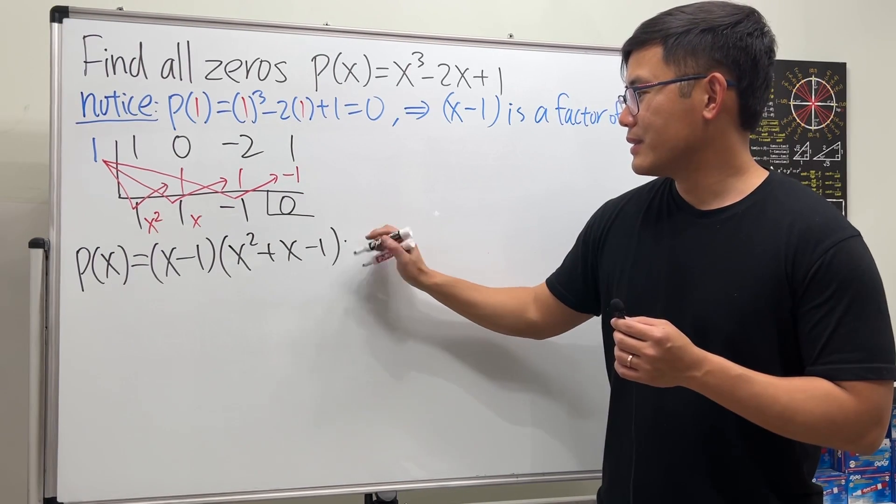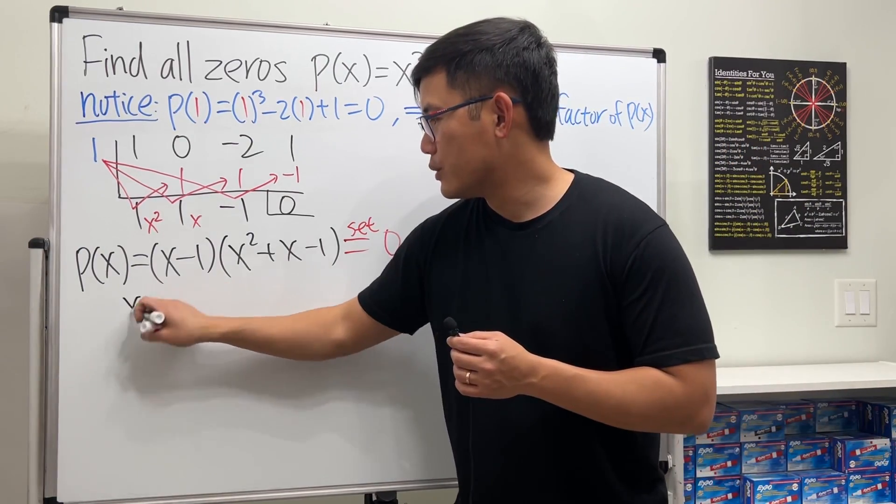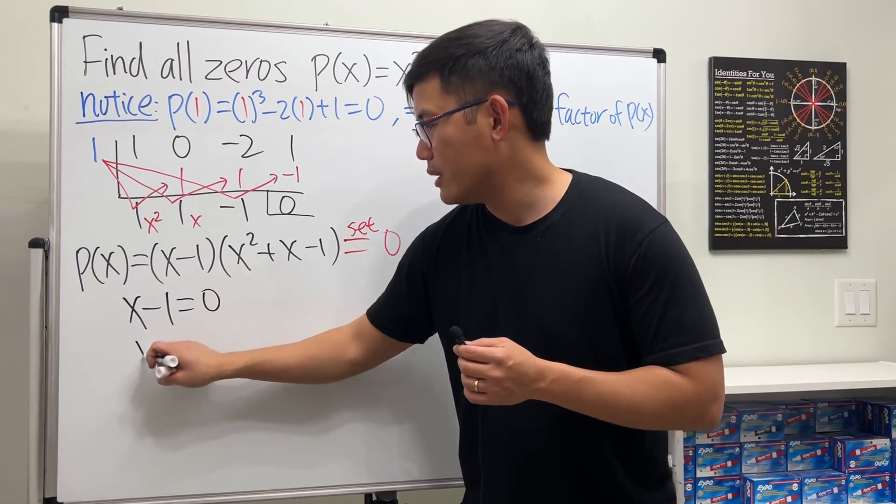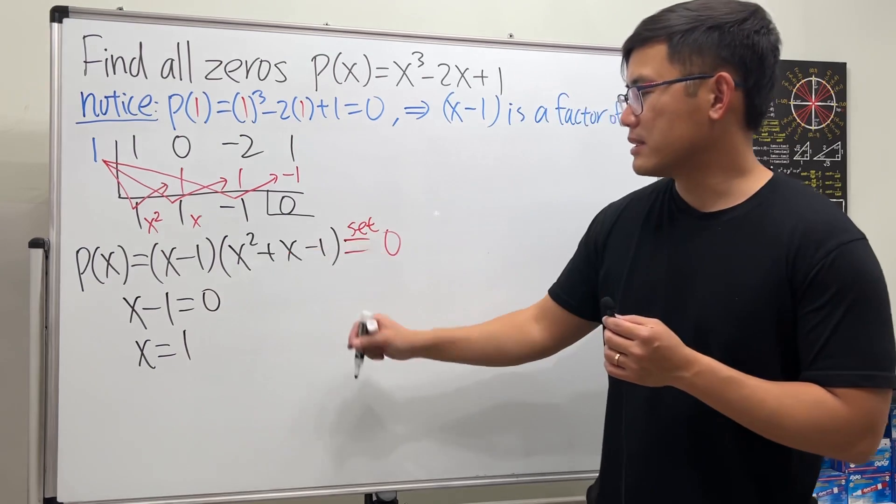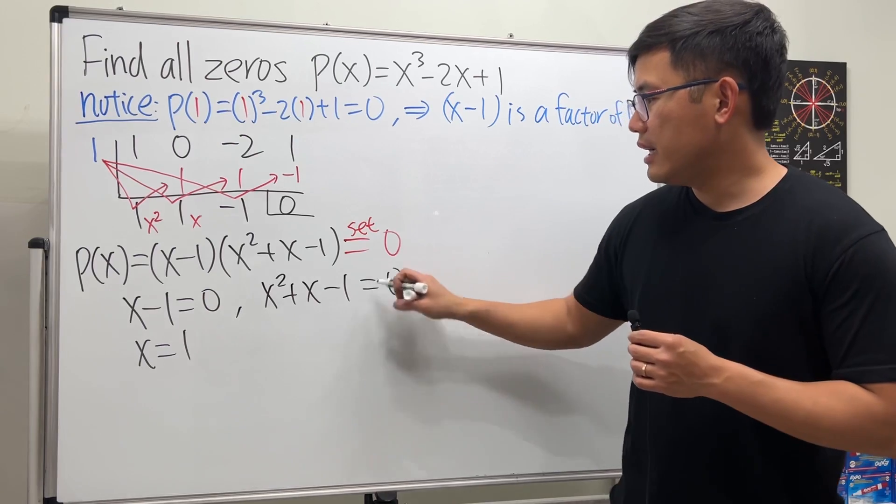We make the first factor equal to zero - I know that's one already done. Now we make the second factor equal to zero, so we have x squared plus x minus one.